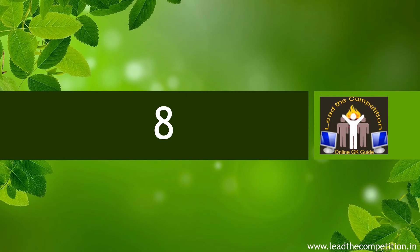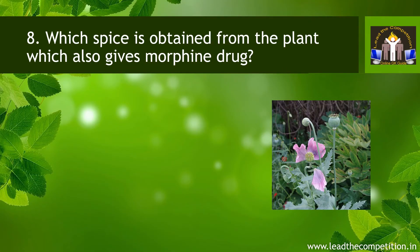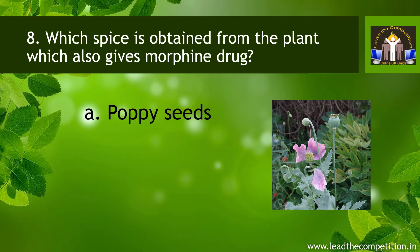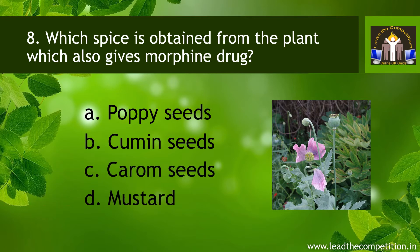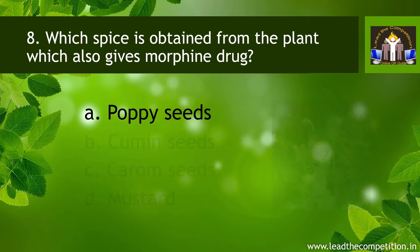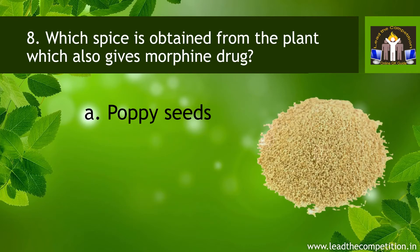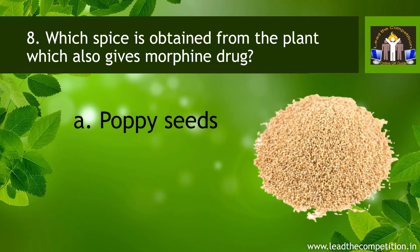Question number 8. Which spice is obtained from the plant which also gives morphine drug? A. Poppy seeds. B. Cumin seeds. C. Carom seeds. D. Mustard. The correct answer is A. Poppy seeds.